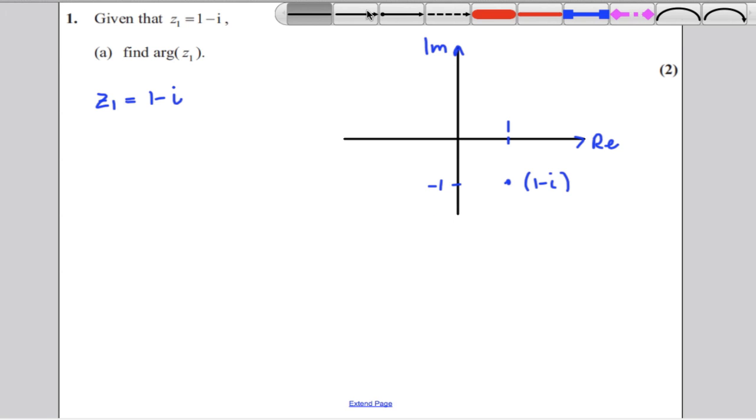So our complex number could be drawn as an arrow from the center as follows. Now the argument will be this angle here. So we could work out that angle. That's what we're trying to work out.